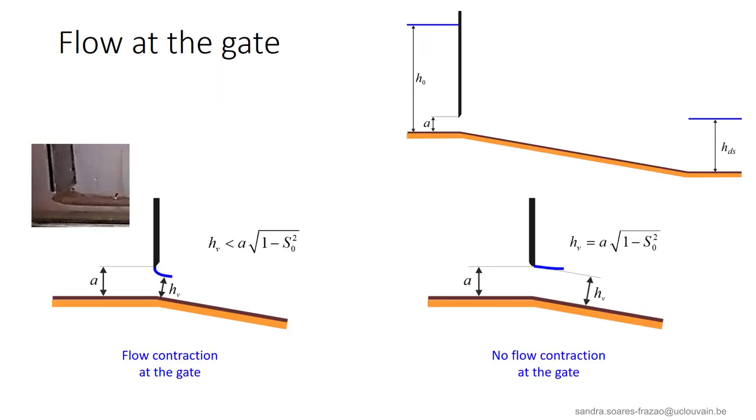At the upstream side, we have a gate that controls the flow and determines the discharge. In the case of an underflow gate, the water depth depends on the design of the gate. Usually, a contraction of the flow occurs as sketched here and illustrated in the figure.